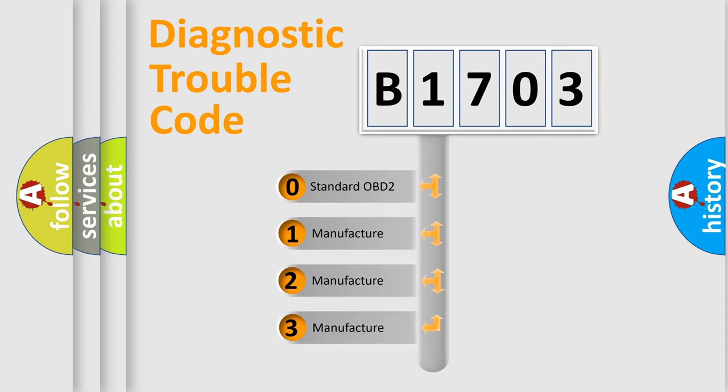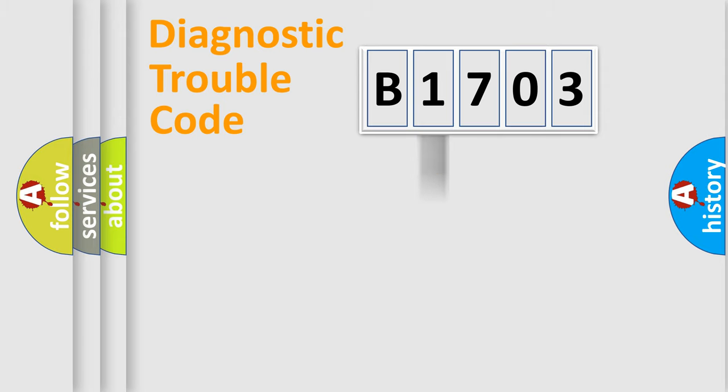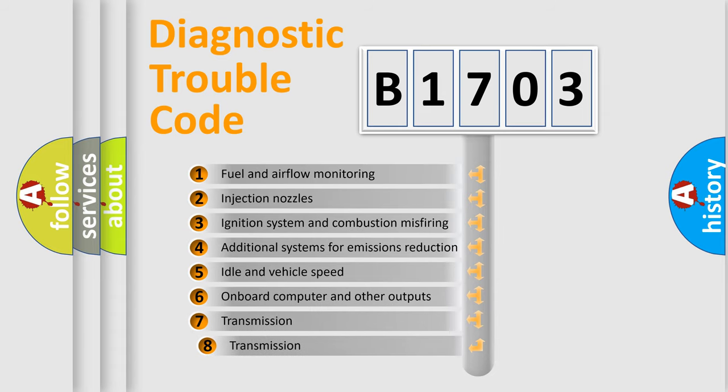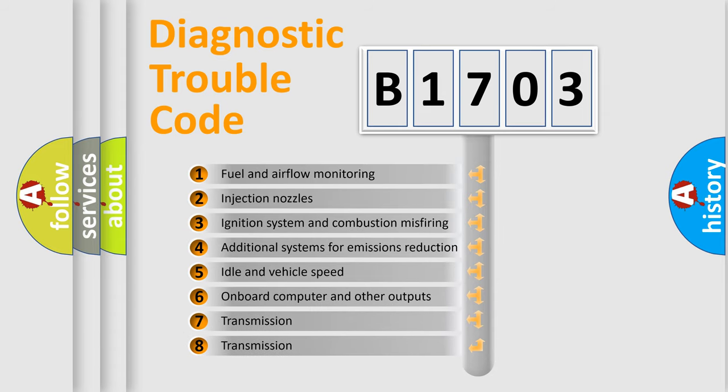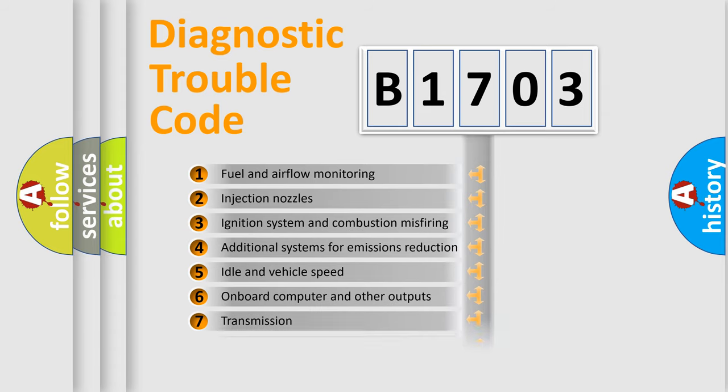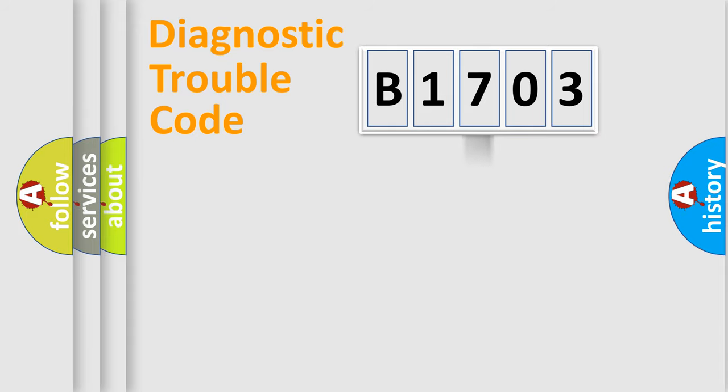If the second character is expressed as zero, it is a standardized error. In the case of numbers 1, 2, or 3, it is a more manufacturer-specific expression of the car-specific error. The third character specifies a subset of errors. The distribution shown is valid only for the standardized DTC code.